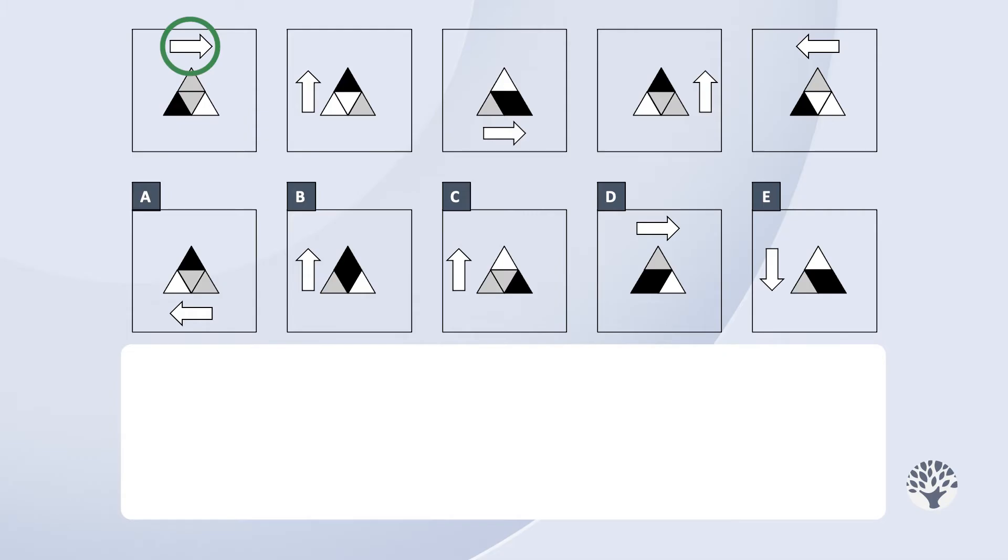a white arrow and a large triangle made up of four small triangles, which are colored grey, white and black. Now, let's analyze the arrow.